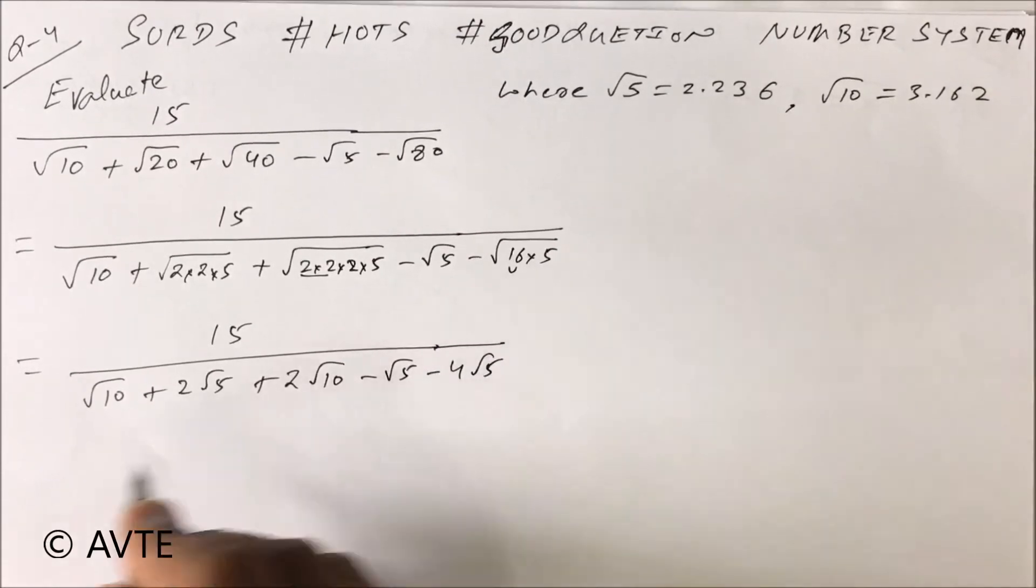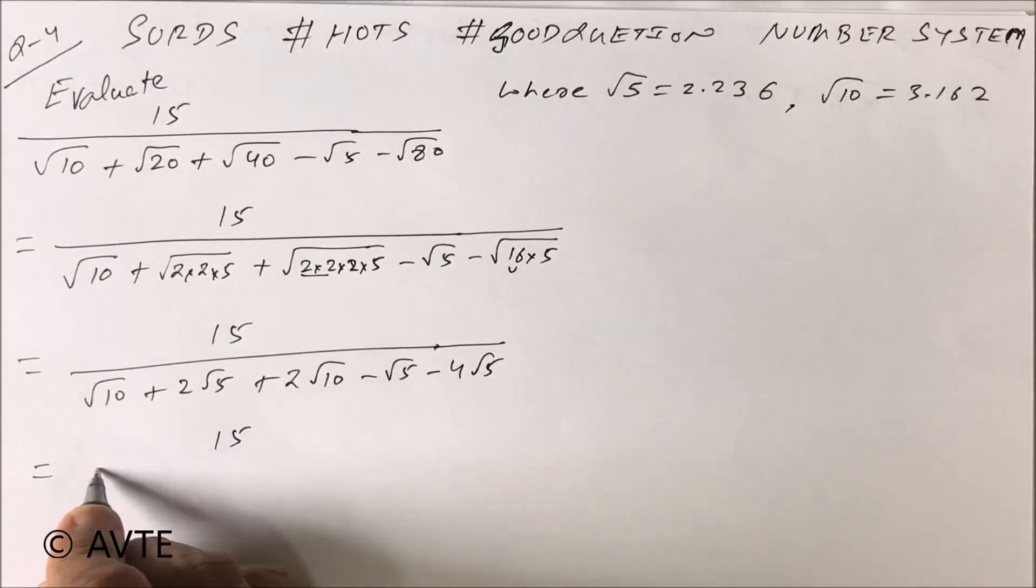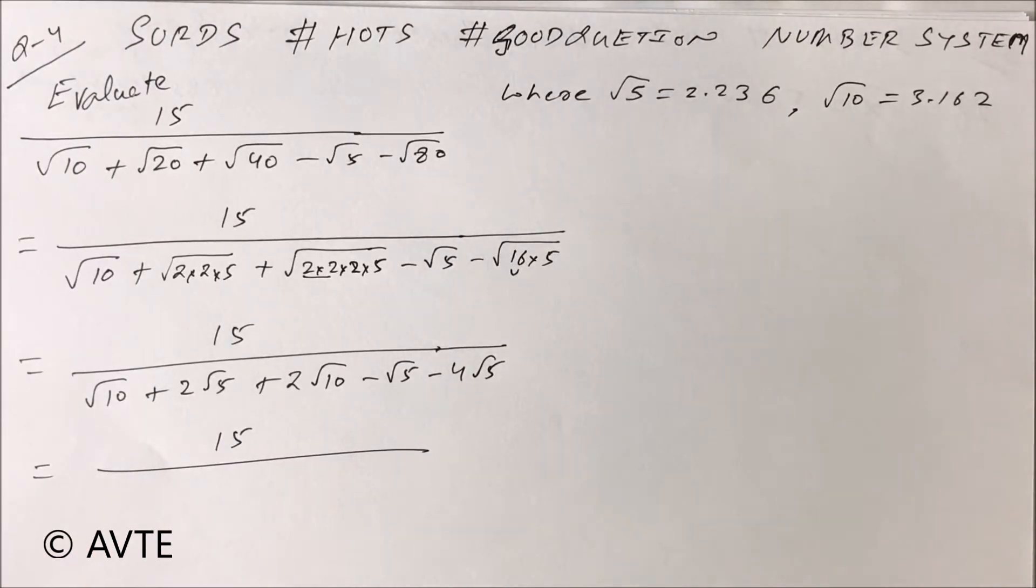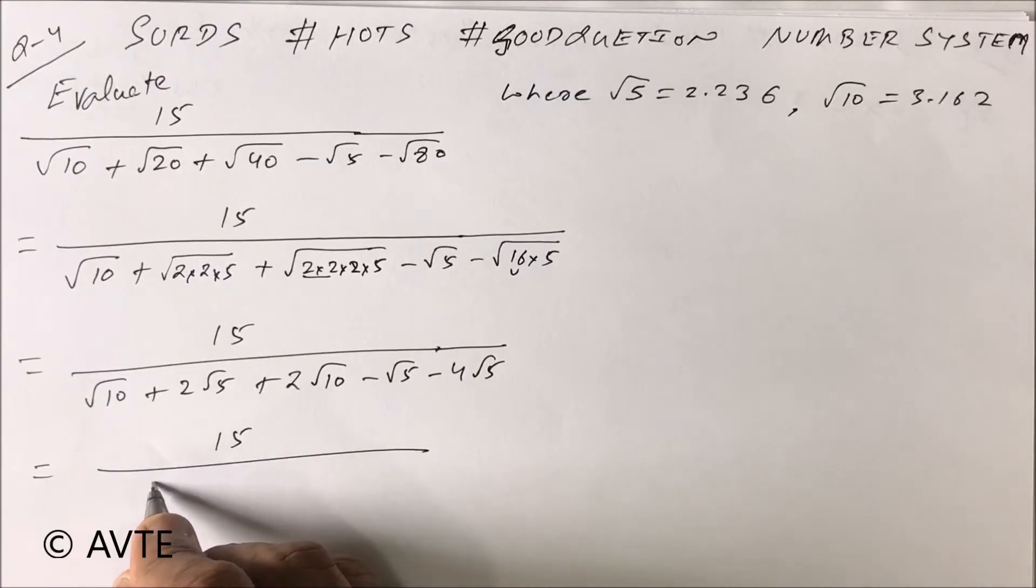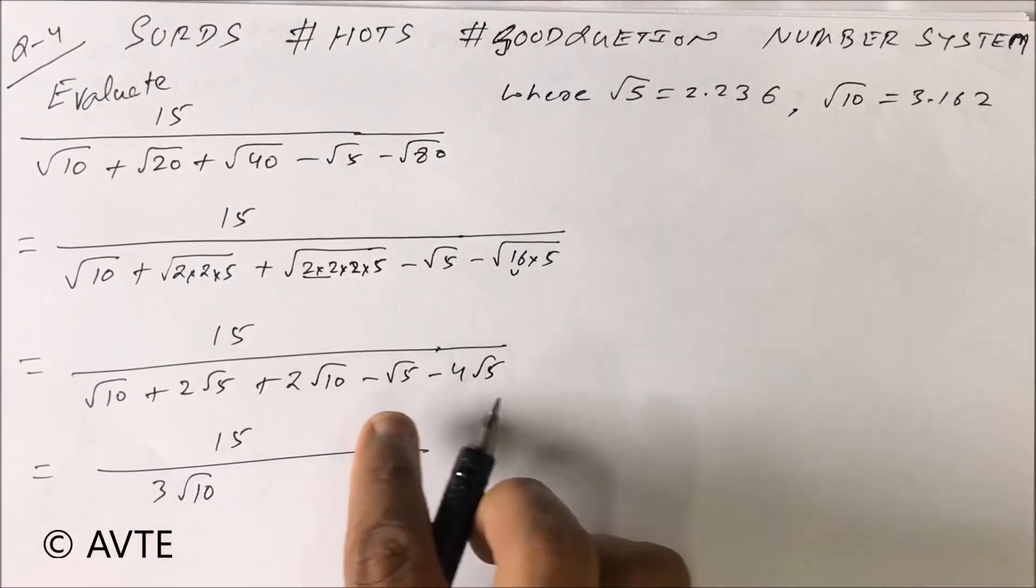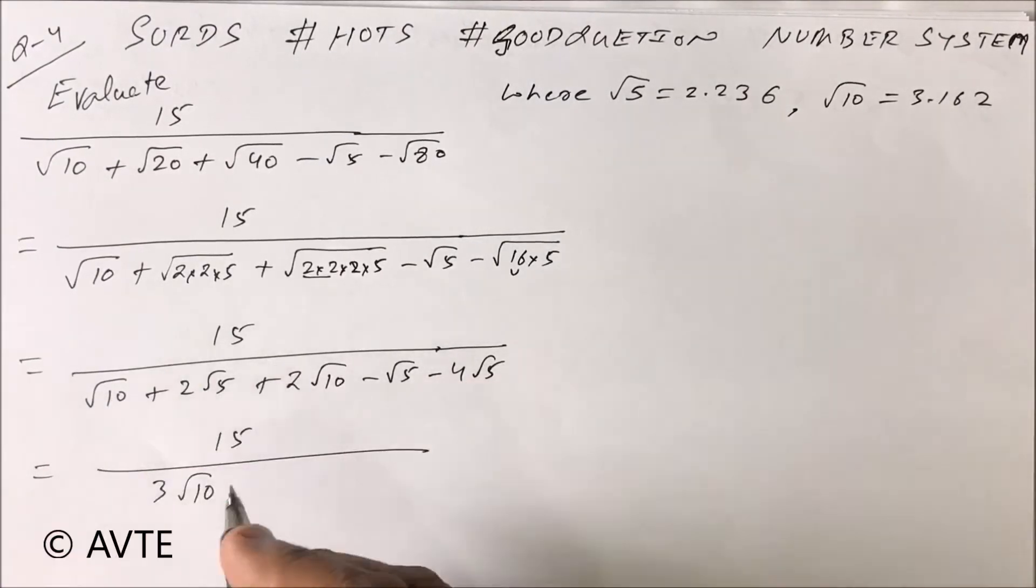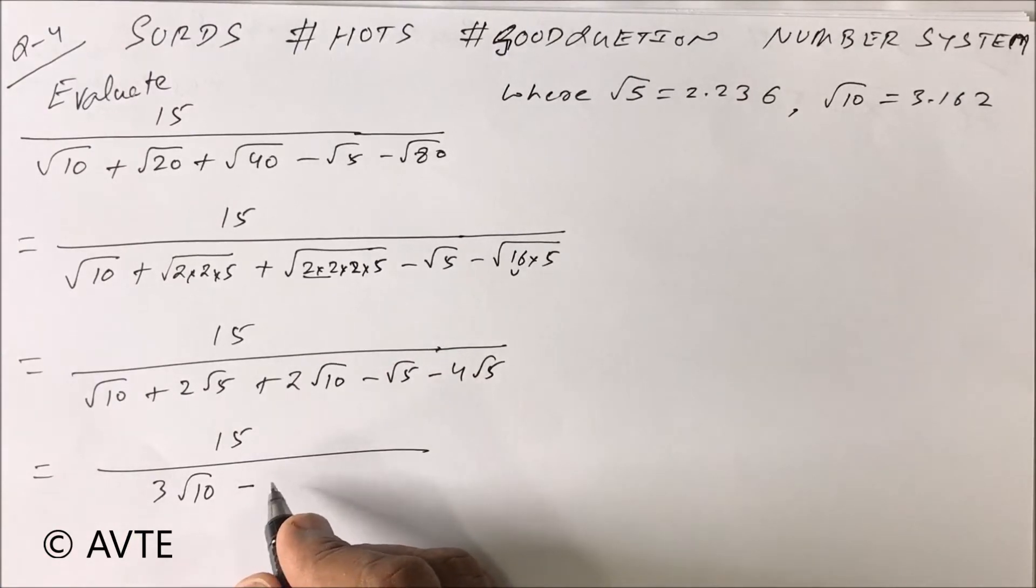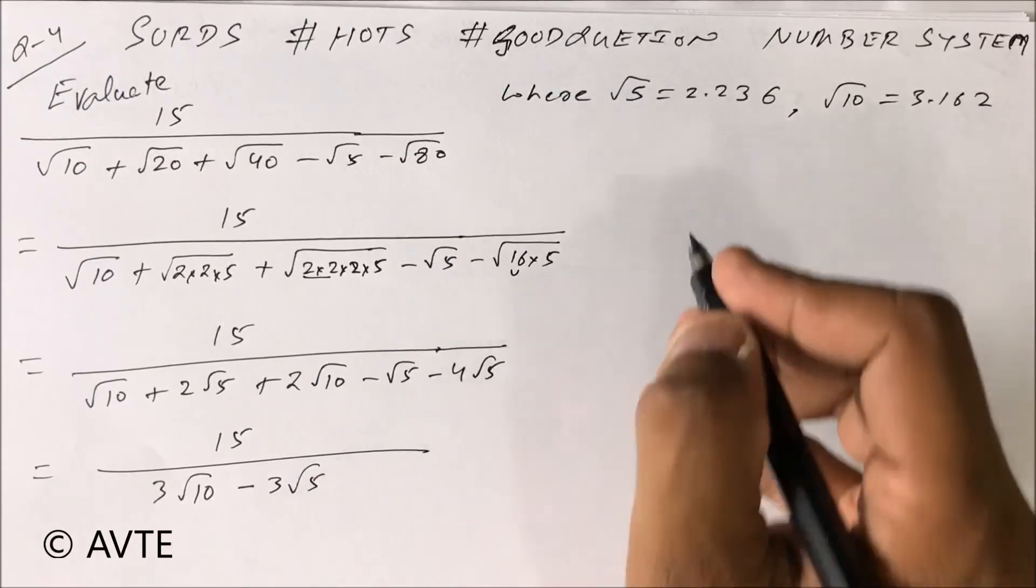Now we have to see the like terms. Like terms are root 10 - this is 3 root 10. This is minus 5 root 5 plus 2 root 5, which is minus 3 root 5.